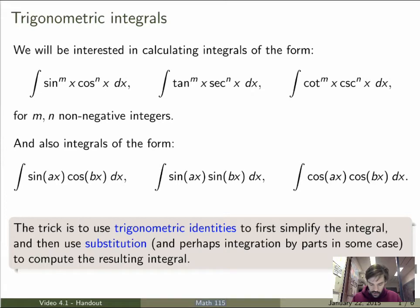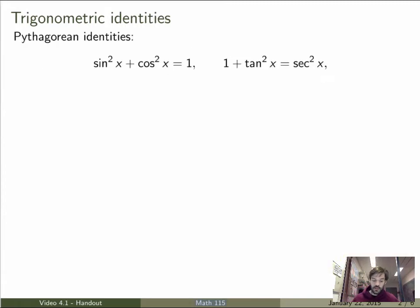Now of course the challenge is to find which trig identity is the right one to simplify the integral. That's not obvious. So what kind of trig identities will we be interested in?